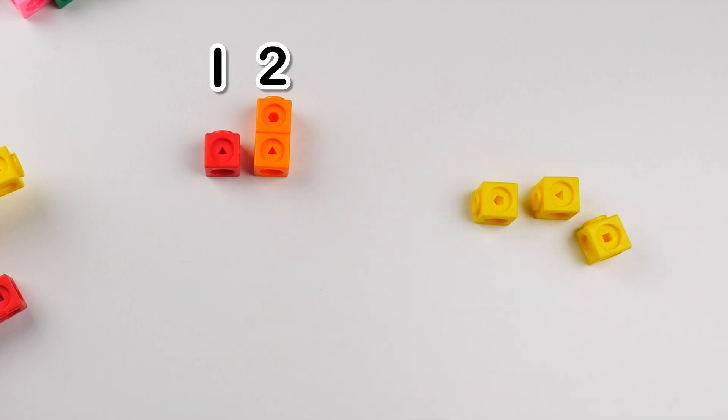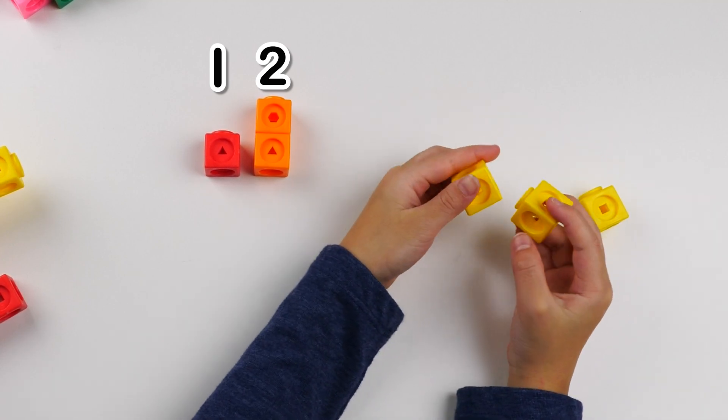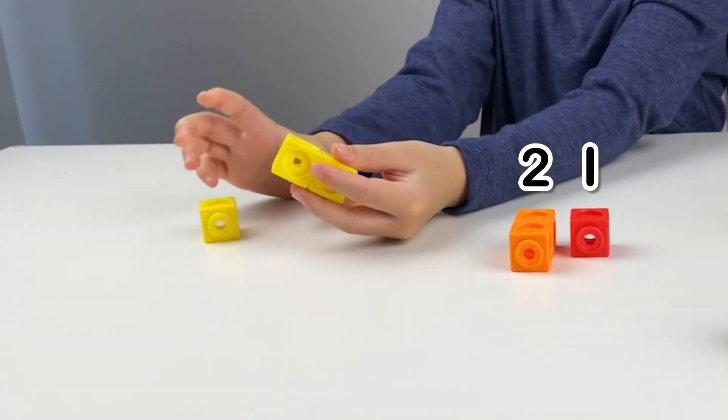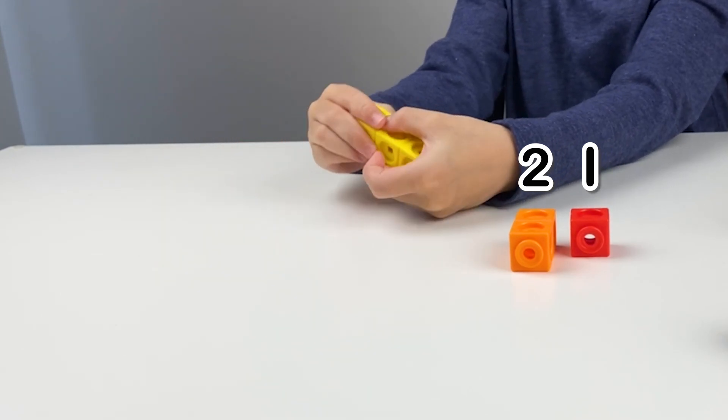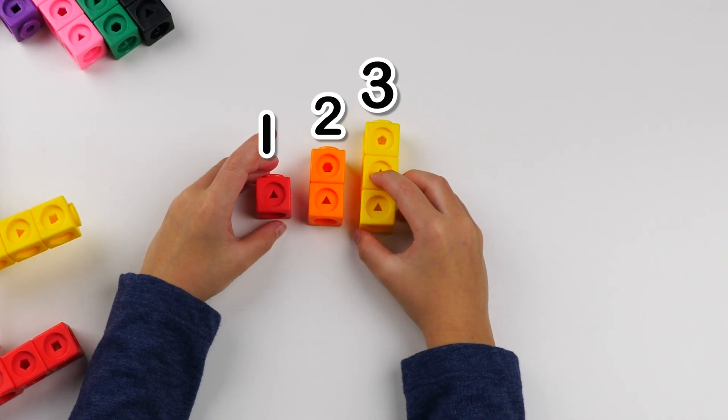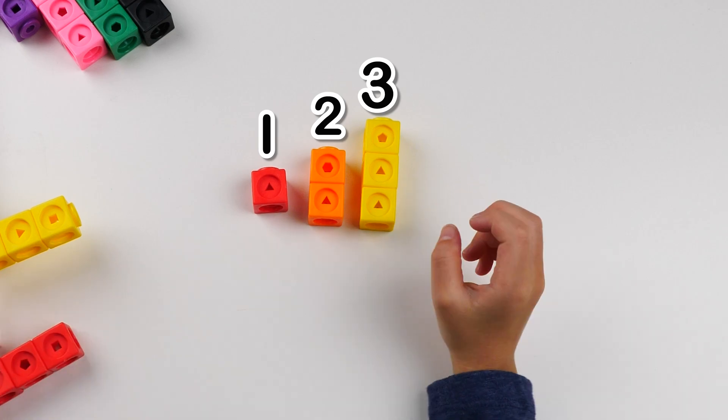Okay, look. There's all these 3 blocks. And look how I connect them together. Yeah! We have number block 3. 1 plus 1 plus 1 equals 3.